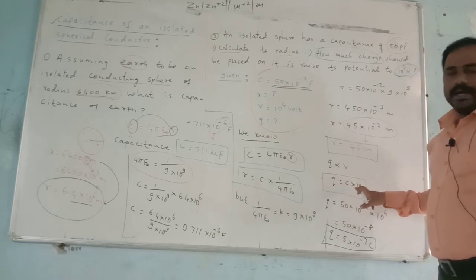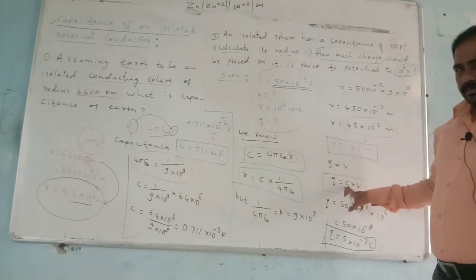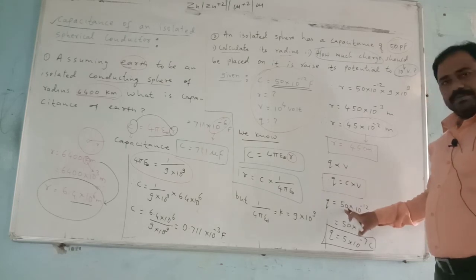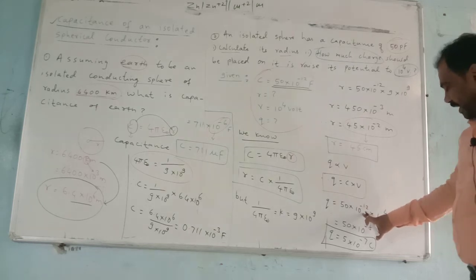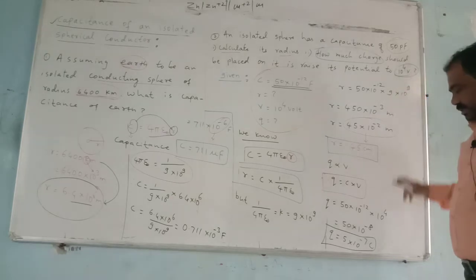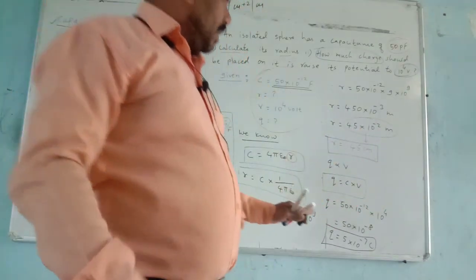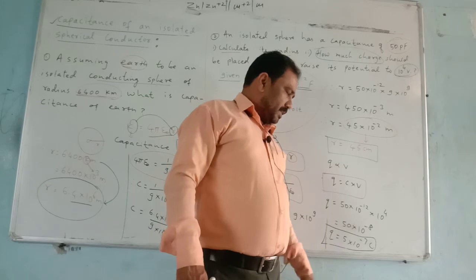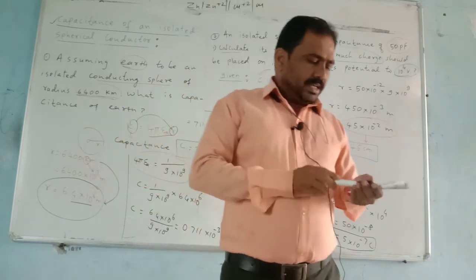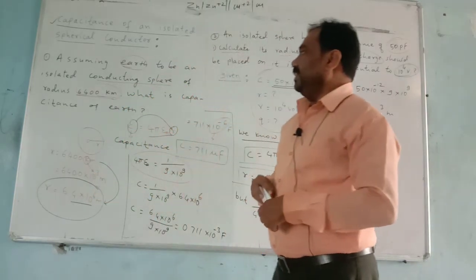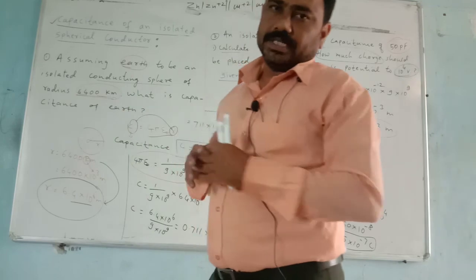To calculate charge we use Q = C × V, where C is capacitance given as 50 picofarad = 50 × 10⁻¹², and V = 10⁴ volts. After substituting all values, Q = 5 × 10⁻⁷ coulomb. These concepts are very simple and MCQs depending on capacitance are also straightforward.